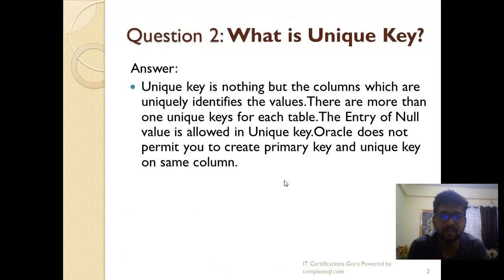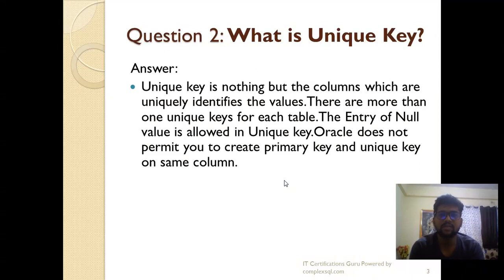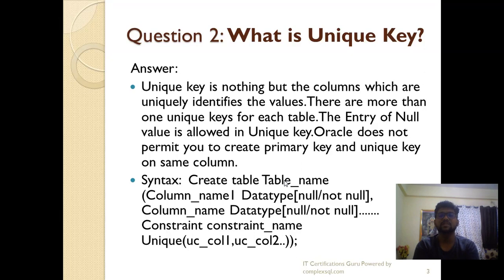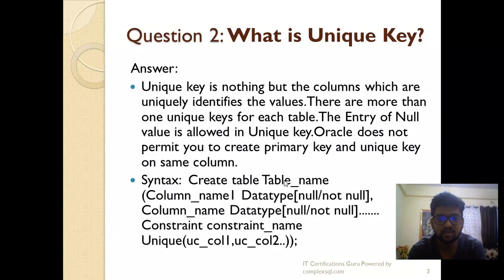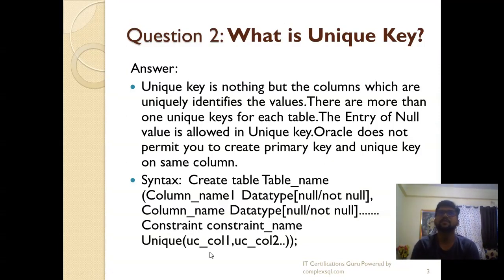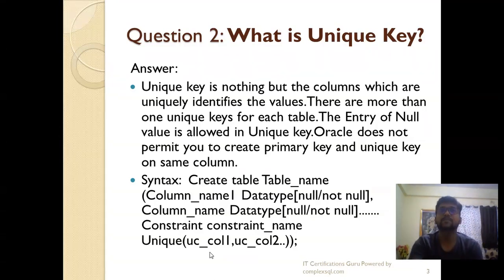What is a unique key? A unique key is a column that uniquely identifies values in a table. There can be more than one unique key per table, and entry of null values is allowed in a unique key. Oracle does not permit creating both a primary key and a unique key on the same column. The syntax is: CREATE TABLE table_name (column_name data_type, CONSTRAINT constraint_name UNIQUE (column_name)). The naming convention for unique key constraints is 'uc_column_name', which helps differentiate multiple keys. Unique, primary, and foreign keys are mostly used in normalization.